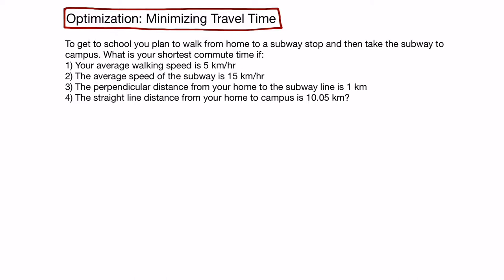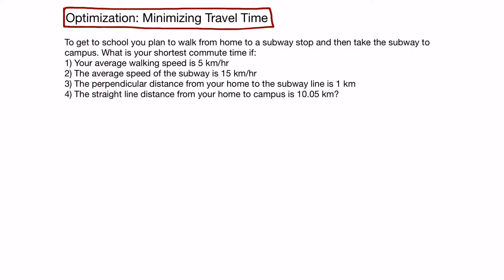The first step is to draw a diagram to visualize the situation. Our plan is to walk from home to a subway stop and then take the subway to campus. So let's add our home and then let's add the campus. We know there's a subway line that goes into the campus, so we'll add that. The perpendicular distance from the home to the subway is 1 km, and the straight line distance from home to campus is 10.05 km, so we'll add that too.